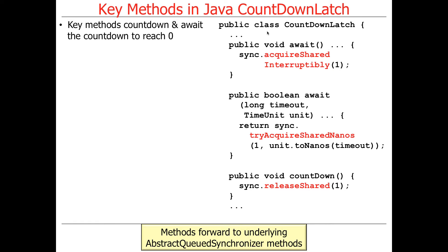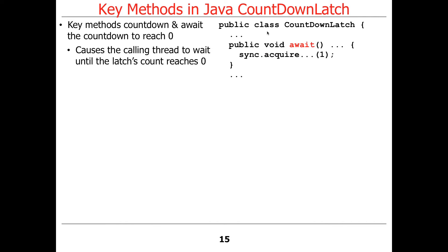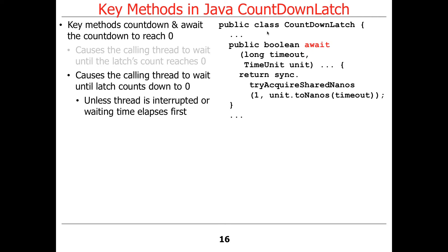Underneath the hood, these methods forward to the underlying abstract queue synchronizer methods. When you call await, it will block until the count reaches zero. In the context of the Palantir Manager app, the waiter thread will wait for the count to drop to zero, then wrap things up and shut down. If you call the timed version of await, it will also wait for the count to equal zero, or wait for the time to elapse, or for an interrupt — which is useful when you want to bound the amount of time you're willing to wait.